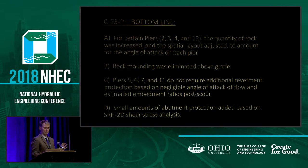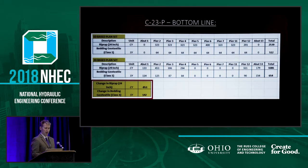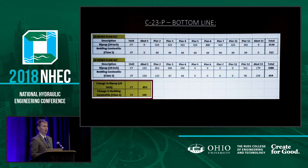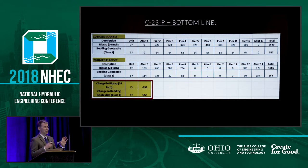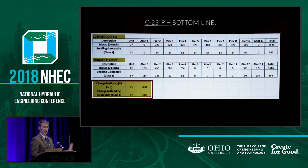Bottom line for this structure: for certain piers, the quantity of rock was increased. I thought I was supposed to be up here talking about efficiencies and decreasing cost — but in those cases, the quantity of rock was actually increased because, using our engineering judgment and the best available data from our two-dimensional analysis, that quantity of rock needed to go up. We adjusted the spatial layout of that protection to account for the angle of attack. We had some rock mounding in the original one-dimensional plan set, which we eliminated. For the piers that did not require additional revetment, we made that determination based on negligible angle of attack and estimated embedment post-scour. We also added a small amount of abutment protection based upon the shear stress analysis and velocities from SRH2D. We're taking this data and showing it to our upper management, our resident engineers, and our project engineers — demonstrating that the tools we now have at our disposal dramatically change what actually goes on the plan set.